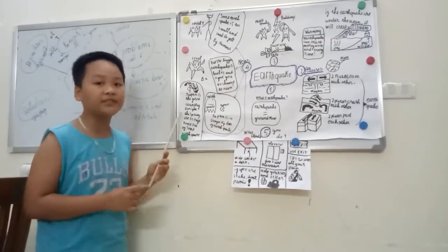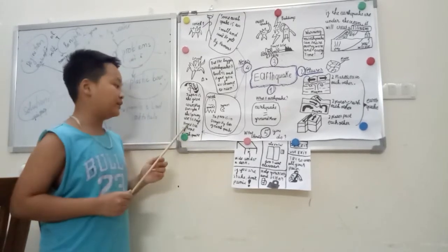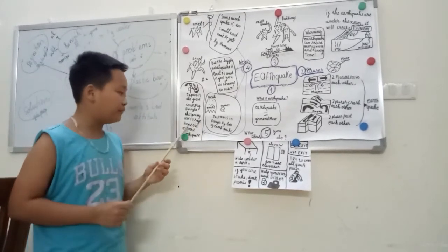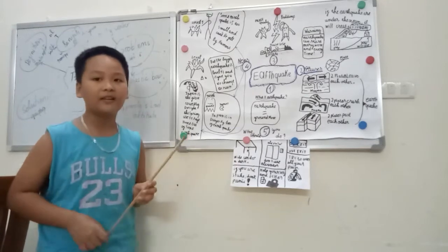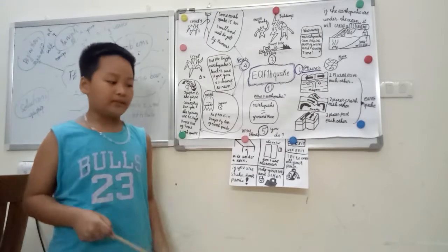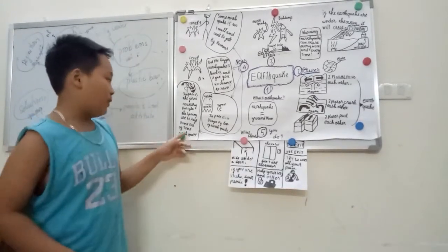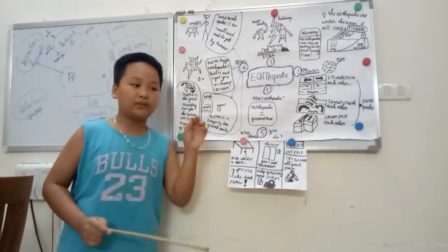Japan is the first country that designed the spring used to save from some earthquakes. This is the normal spring. When you touch it, it will bounce everywhere. But this kind of spring, when you touch it, it will go down and go up again.